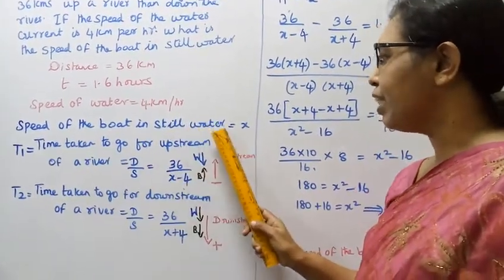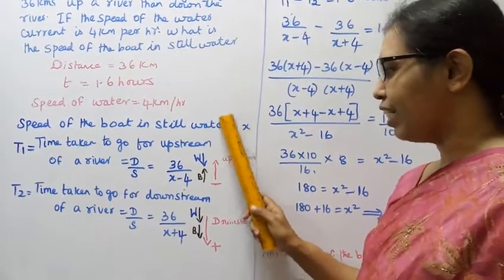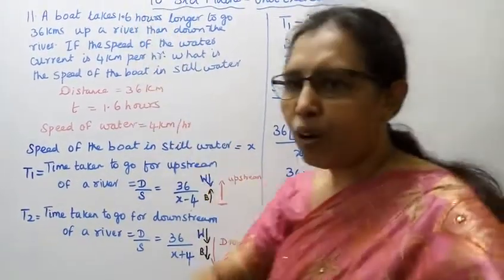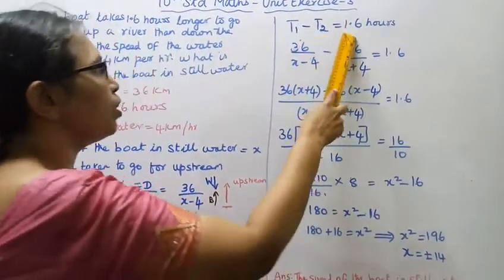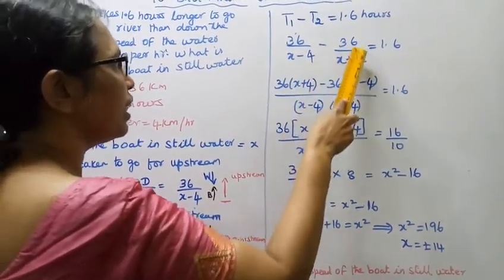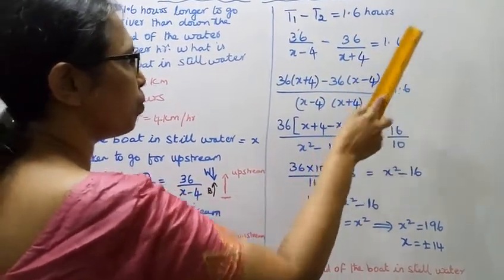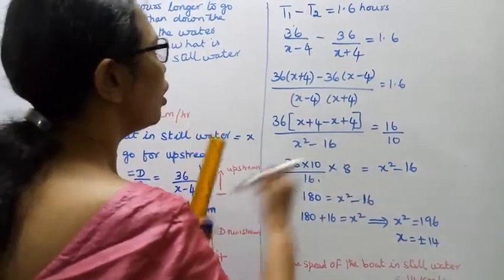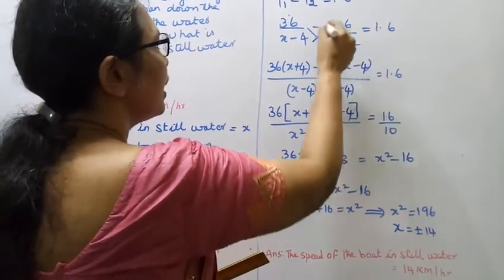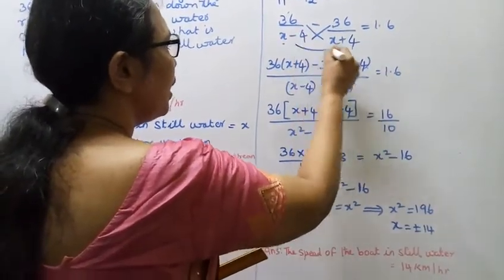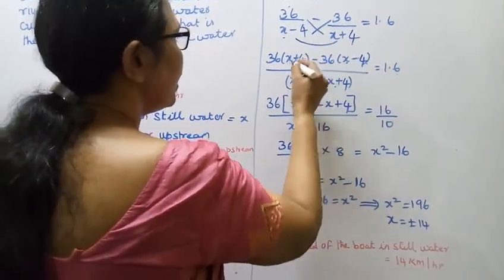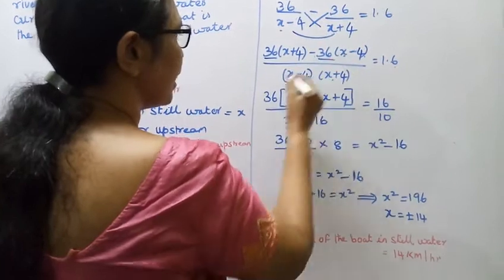The speed of the boat in still water is x. T1 minus T2 equals 1.6. So 36 by x minus 4 minus 36 by x plus 4 equals 1.6. Cross multiplying: 36 times x plus 4 minus 36 times x minus 4 divided by x minus 4 times x plus 4 equals 1.6.